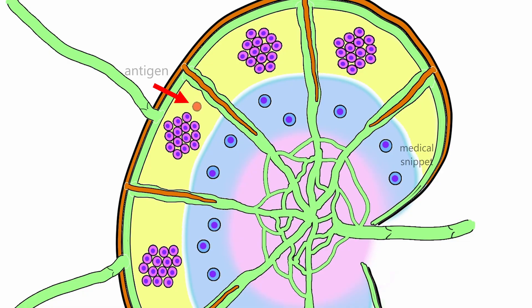When the B cells of the outer cortex are exposed to antigen, they are activated and form a germinal center. Following this, resting B cells and dendritic cells surround the germinal center to form a mantle zone.